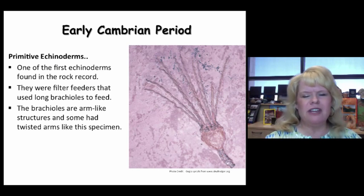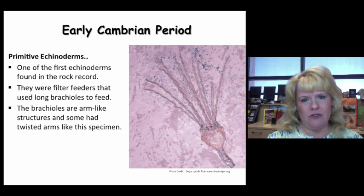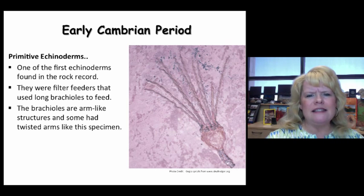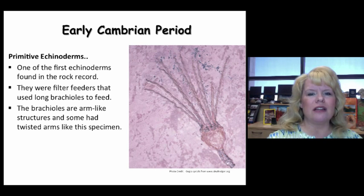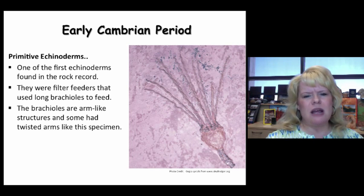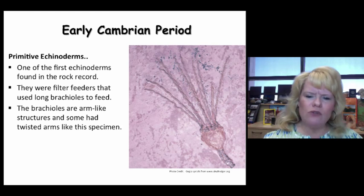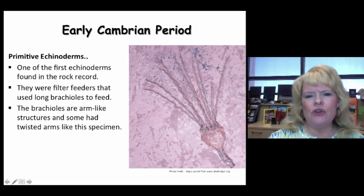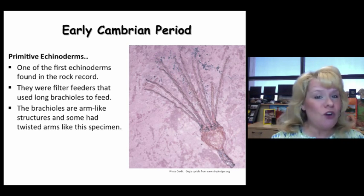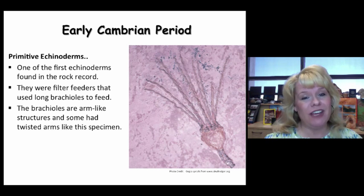We get our first primitive echinoderms in the Cambrian. While they may look like crinoids, they are not — they are the most primitive versions of crinoids. It's not officially correct to say crinoids appear in the Cambrian; rather, eocrinoids appear, which are very primitive filter feeders. They have brachioles — twisted appendages used for filter feeding — along with a stem made of little columnals and a calyx. You'll see more echinoderms starting in the Ordovician, but the first appear in the early Cambrian.